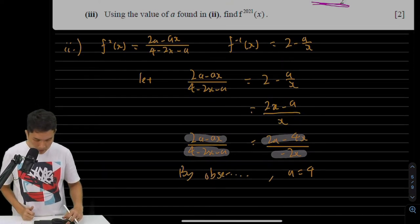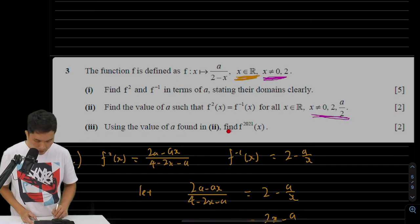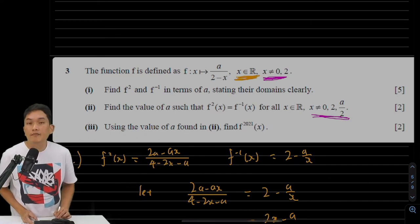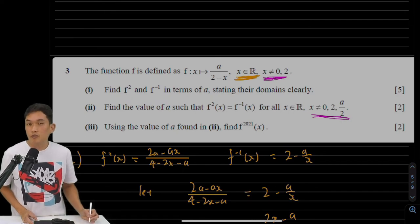Now, in part 3, it says that when a is equals to 4, can you find out what is f of 2021 of x? So what's f 2021 of x?